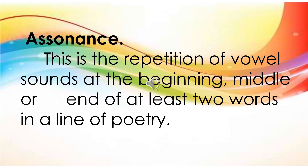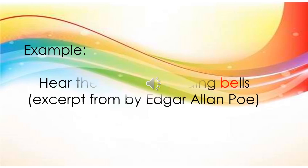Another type of sound device is assonance. This is the repetition of vowel sounds at the beginning, middle, or end of at least two words in a line of poetry. Example: 'He fumbles at your spirit.' Another example: 'Hear the mellow wedding bells.'